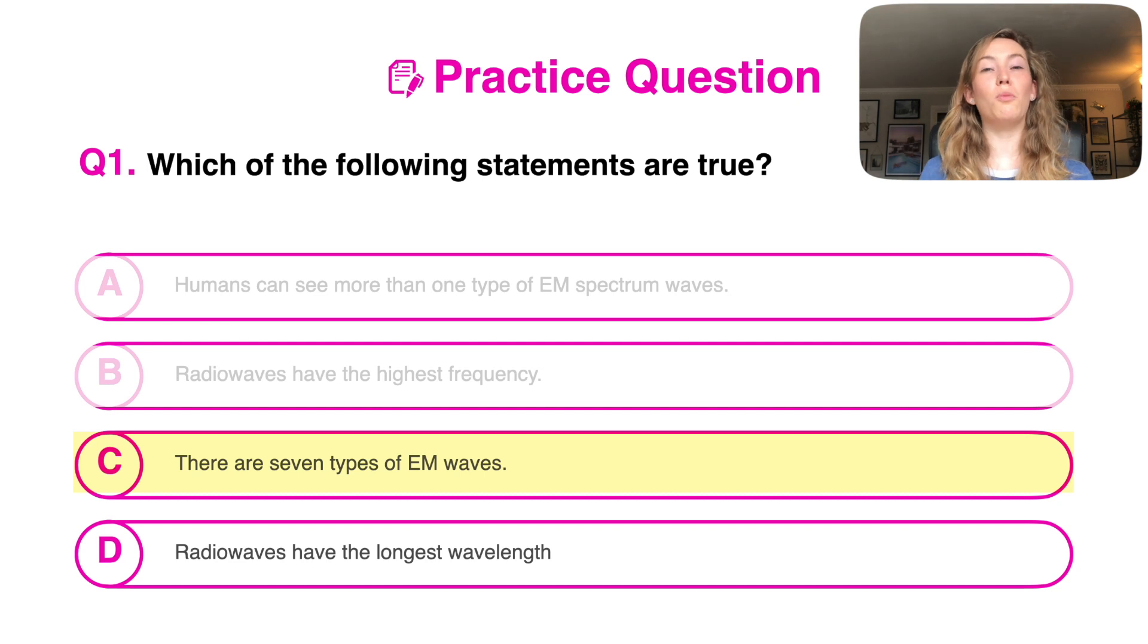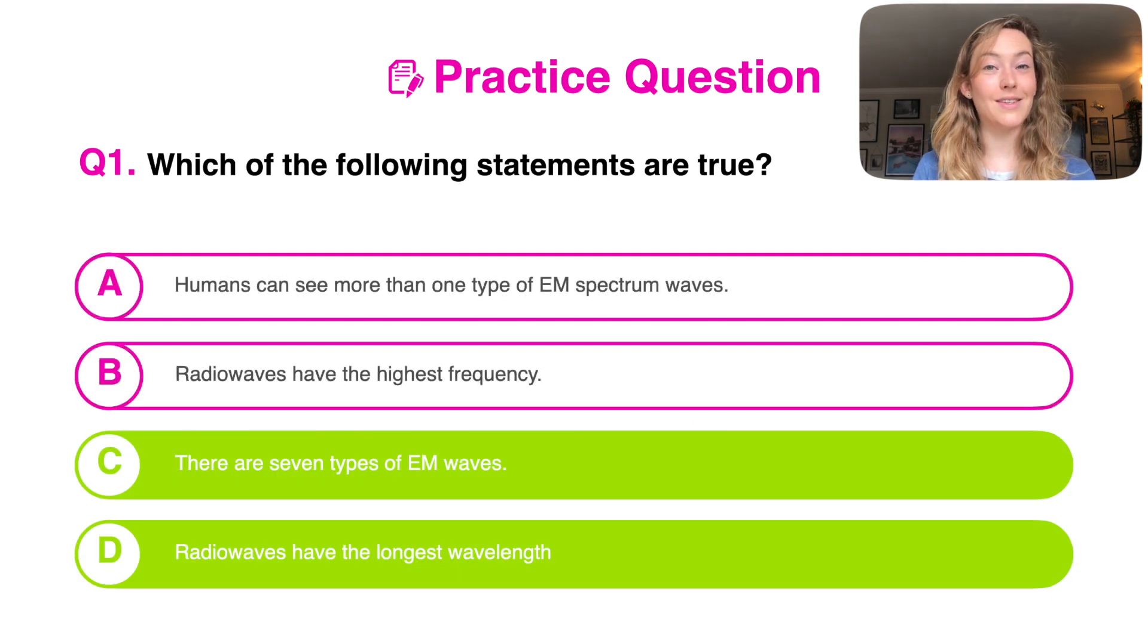There are seven types of electromagnetic waves. Well, if you jump back and you've remembered your mnemonic, that is indeed true. There are seven types. And radio waves have the longest wavelength. Well, we've just talked about this. They do indeed. So we can see here that C and D are correct.